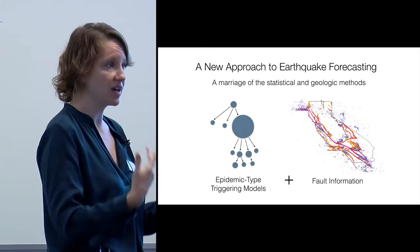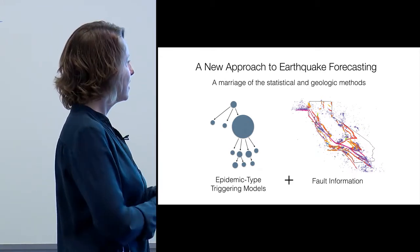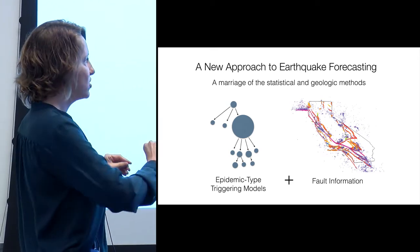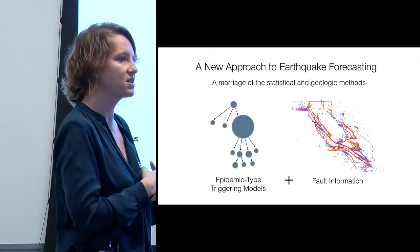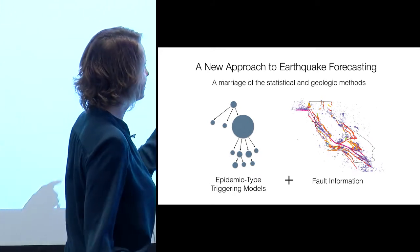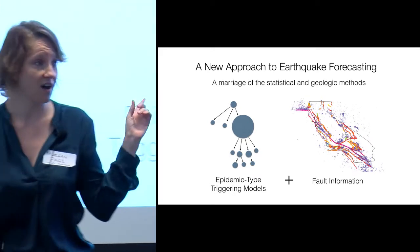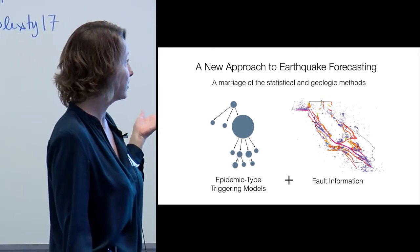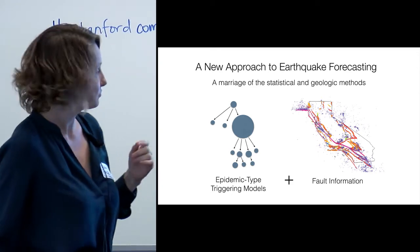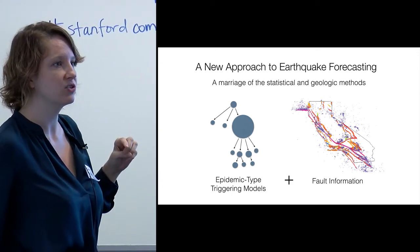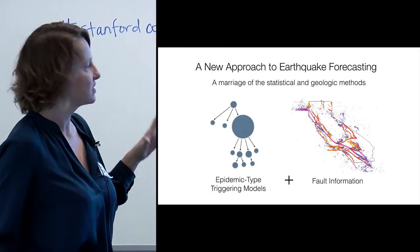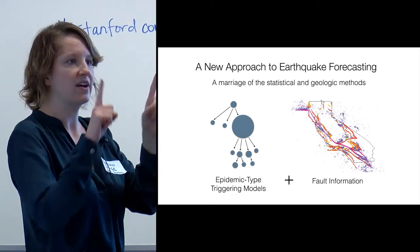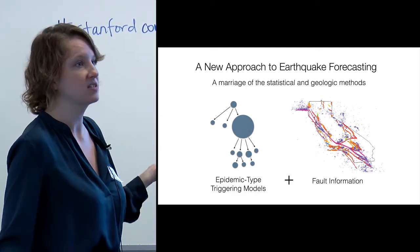So what we're trying to do in California is avoid those kind of mistakes of assuming that faults can only rupture in simple, segmented, characteristic ways. We're trying to put together these epidemic types of forecasting models with the fault-based information, because we think both are important. It's important to know where the faults are, particularly because they're not all lit up by seismicity that we capture on our network. But it's also important to include earthquake triggering and include the stranger earthquakes, these Tohoku type events that you don't get if you just divide up your fault zones into a few possible earthquake sources.